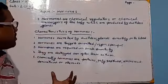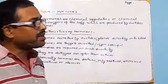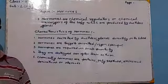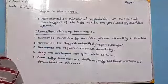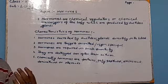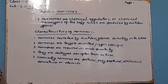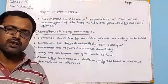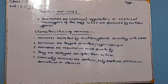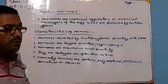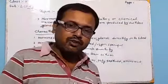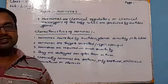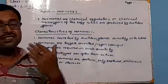Hormones can be defined as chemical regulators or chemical messengers which are produced by ductless glands or endocrine glands and help in control and coordination of the different organ systems of our body or metabolic functions of our body. Hormones are called chemical regulators because they regulate the different functions of our body or the different functions of different organs in a systematic manner.